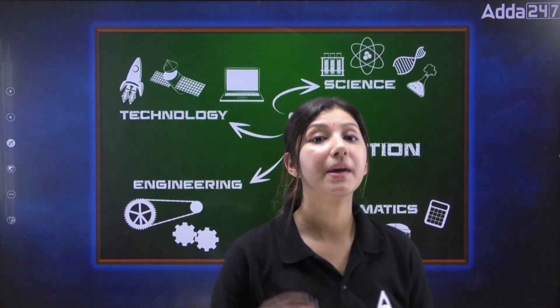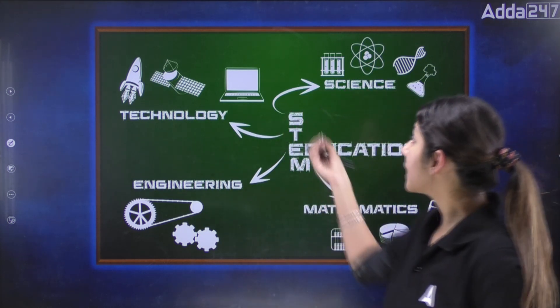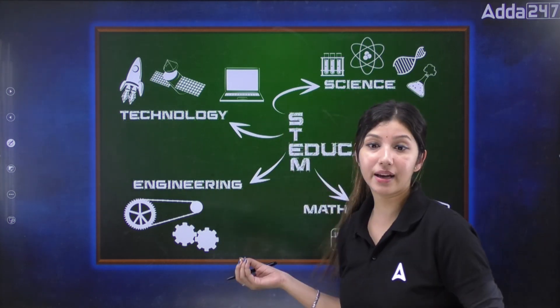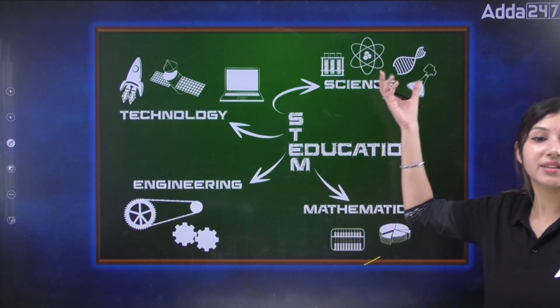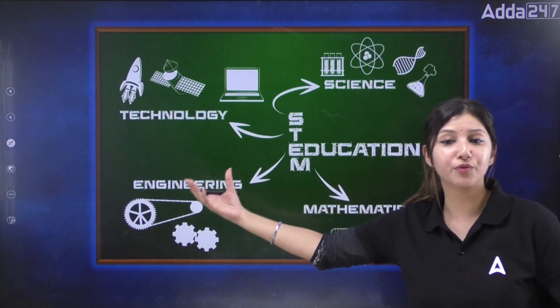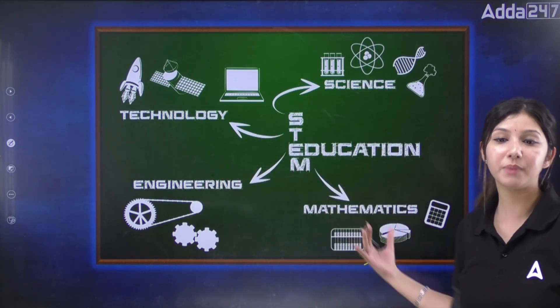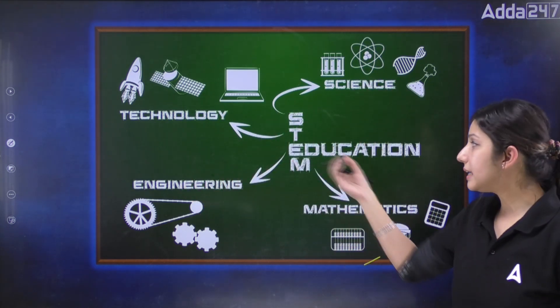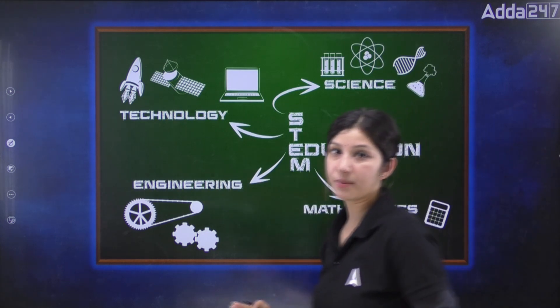So, let's see the full form of STEM. In STEM, S stands for Science, T stands for Technology, E stands for Engineering, and M stands for Mathematics.